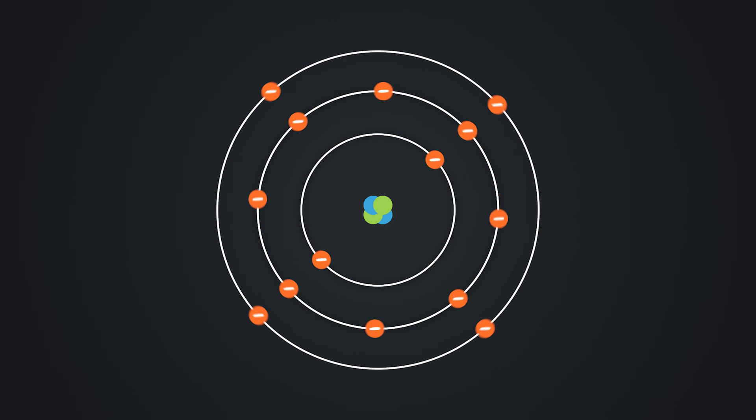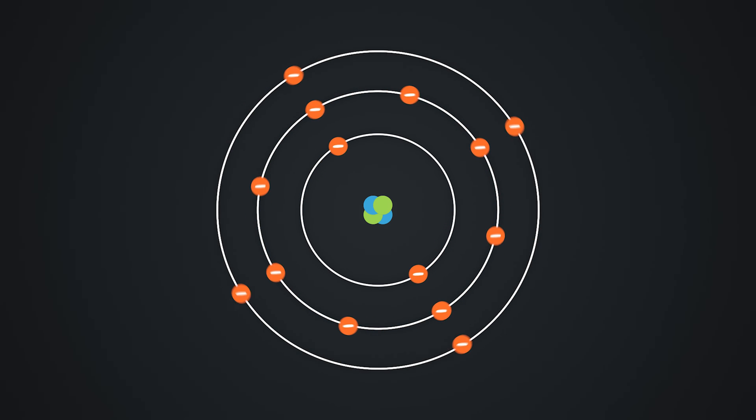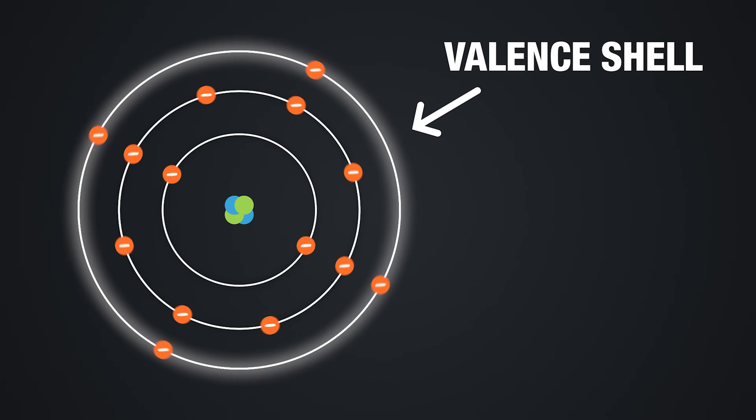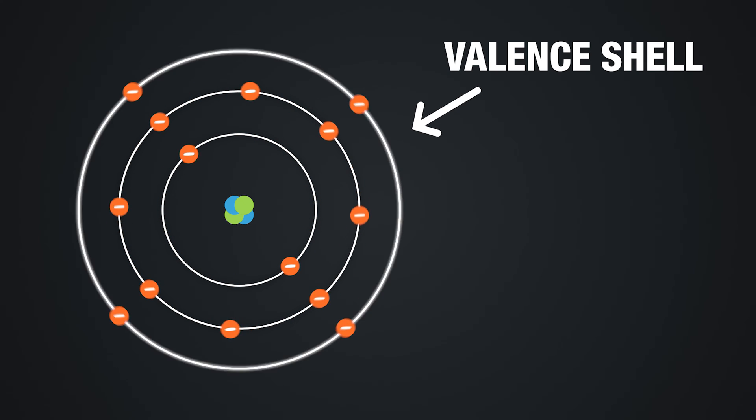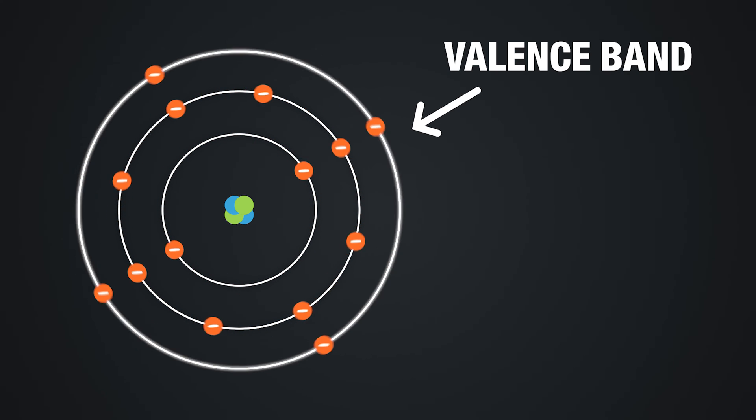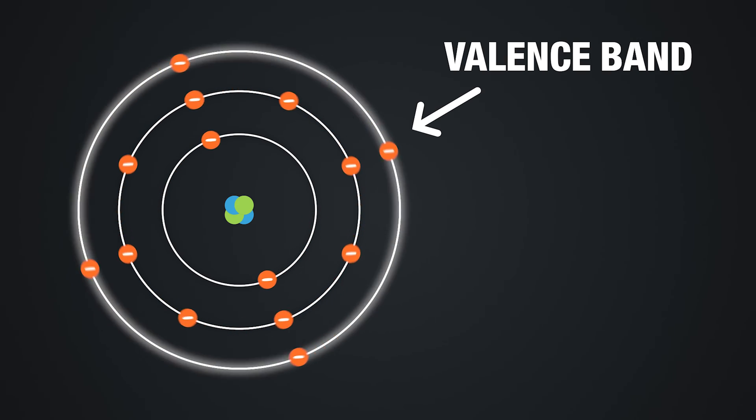The orbits surrounding the nucleus are grouped into energy levels known as shells, and the outermost shell is called the valence shell. The valence shell of an atom represents a band of energy levels, which is why it's also called a valence band, and valence electrons are confined to that band.